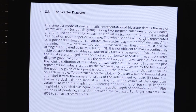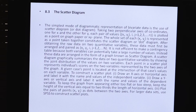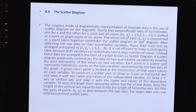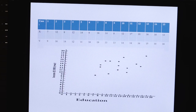Scattered Diagram को किस तरीके से हम बनाते हैं? A simplest mode of diagrammatic representation of bivariate data is the use of scattered diagram or dot diagram। इसमें XY plane होता है जिसमें की X_i, Y_i pair को plot करते हैं - X axis पर X_i की values और Y axis पर Y_i की values। X_1, X_2 से X_n तक और Y_1, Y_2 से Y_n तक values लेकर उन्हें XY plane पर dot plot करते हैं।